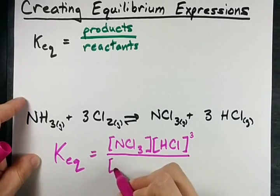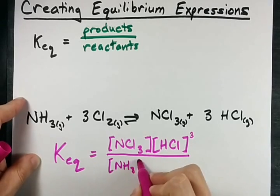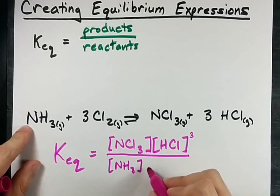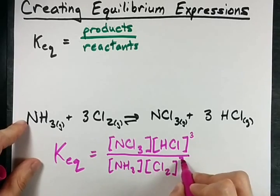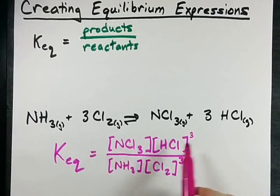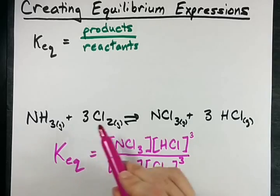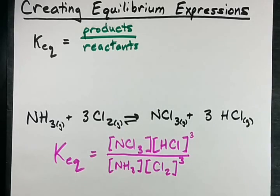In my denominator I put all my reactants. NH3 to the 1 and Cl2 to the 3. All of my products and reactants appear in KEQ because they're all gases. Cool?